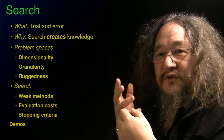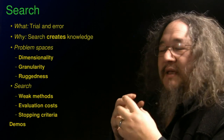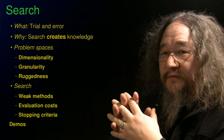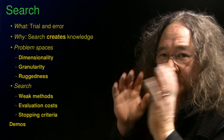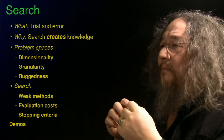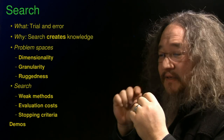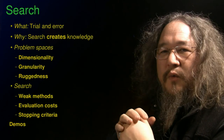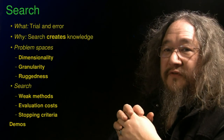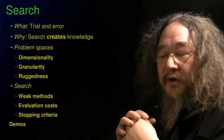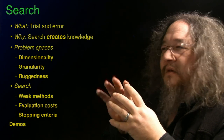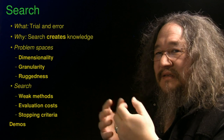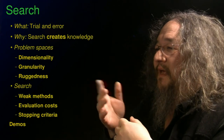Hill climbing is an example of what's called a weak method — weak meaning it makes very few assumptions about the problem space. If we knew certain things about the problem space, like if the output was linearly related to the inputs, we could do much better and come up with very clever solution techniques that would just go right to the answer. But a weak method doesn't make any assumptions; it doesn't assume that the landscape is smooth, for example — it might be rugged. So a weak method is something we can apply to almost anything. That's good. The flip side is it doesn't actually guarantee to work.